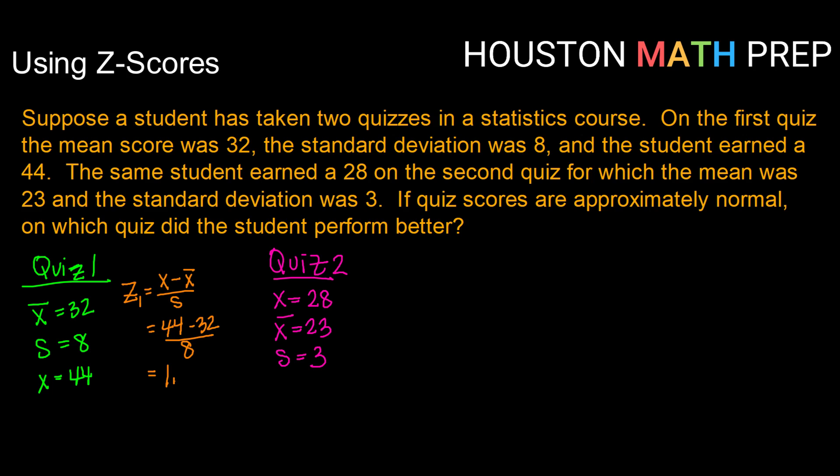Using a calculator there, that gives me a z-score of 1.5. Meaning that on quiz one, the student scored 1.5 standard deviations above the mean.